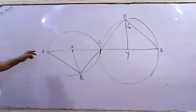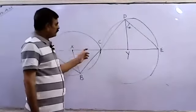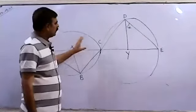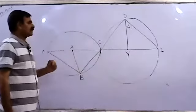It means AC is the diameter of the small circle and CE is the diameter of the larger circle.